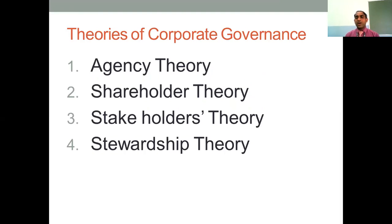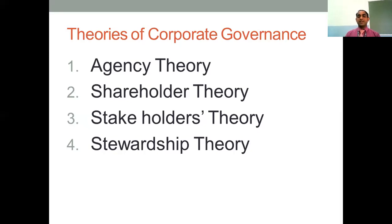If you are going to be listed in SEBI or among the top 500 companies, you have to follow some important rules. For this there are theories of corporate governance to understand. The first theory is Agency Theory, the second is Shareholder Theory, the third is Stakeholder Theory, and the fourth is Stewardship Theory. Mostly we will be discussing Agency Theory and Stakeholder Theory, or sometimes Agency Theory and Shareholder Theory. Stewardship Theory will be a rare question.